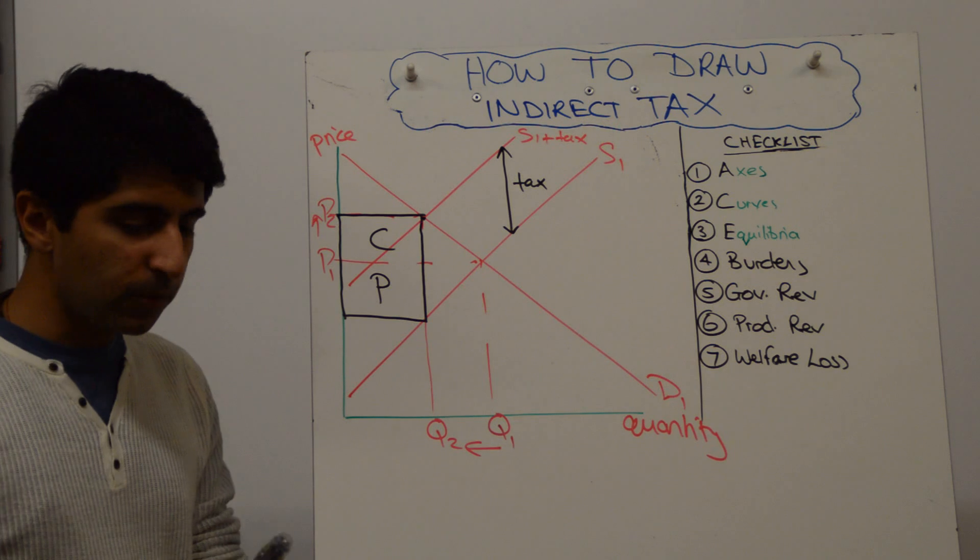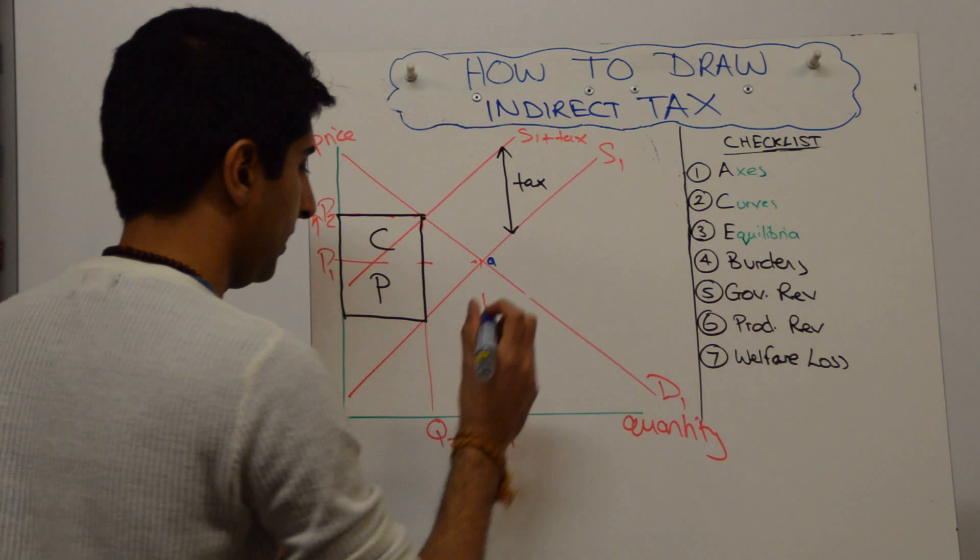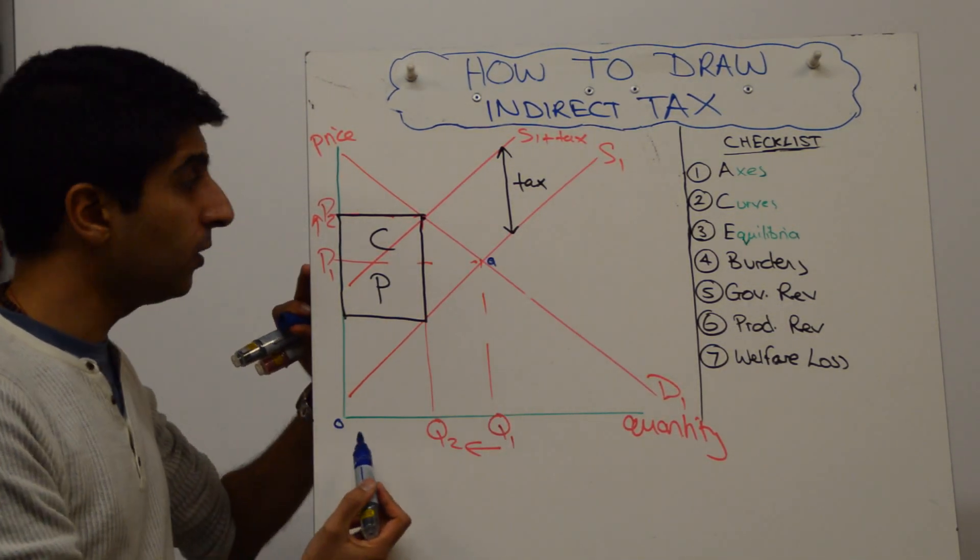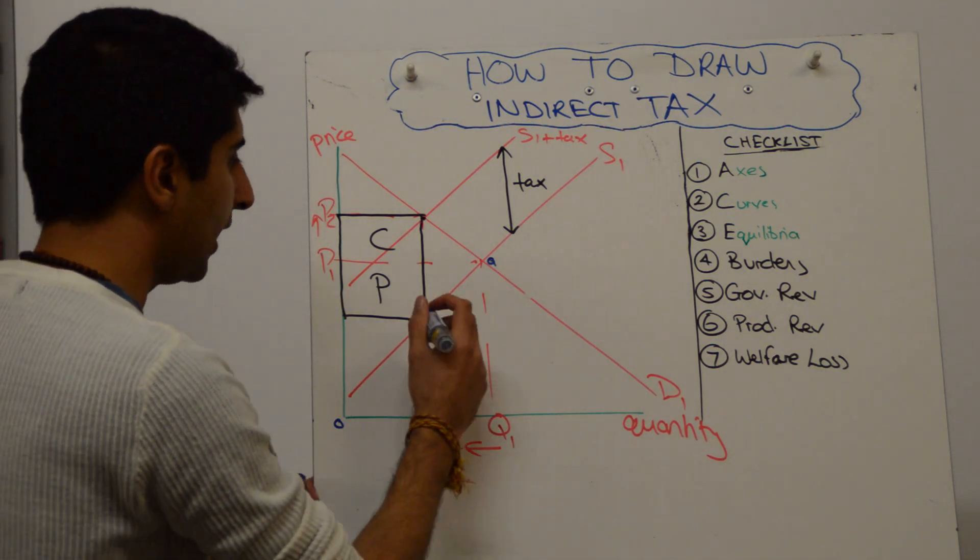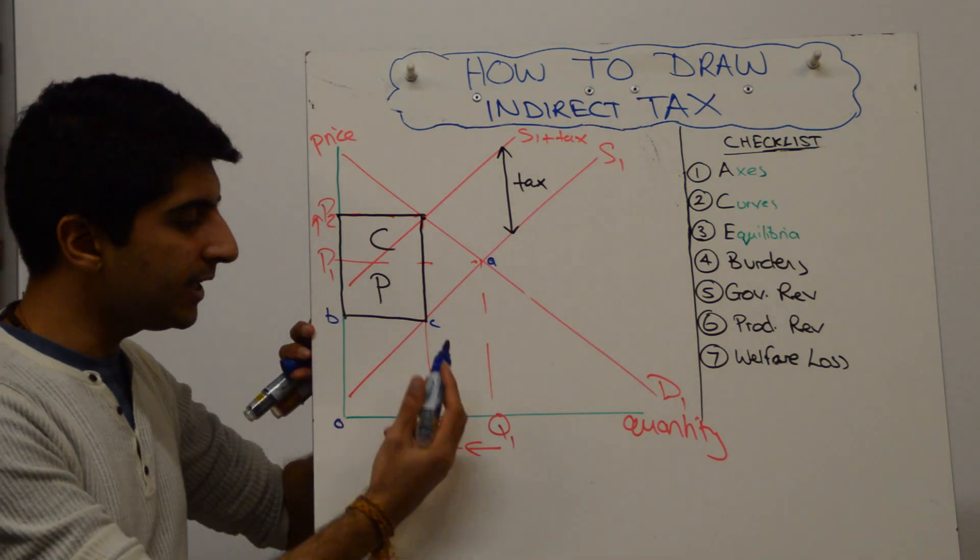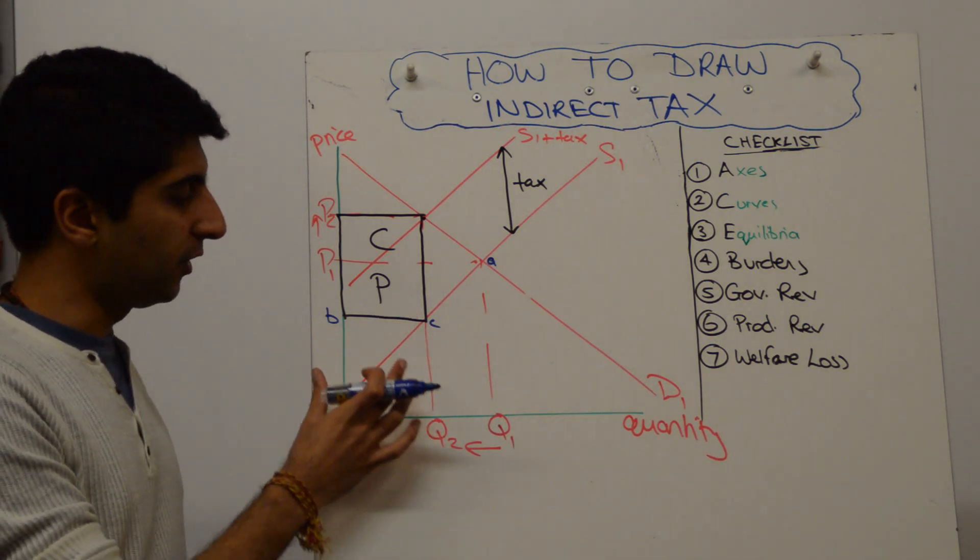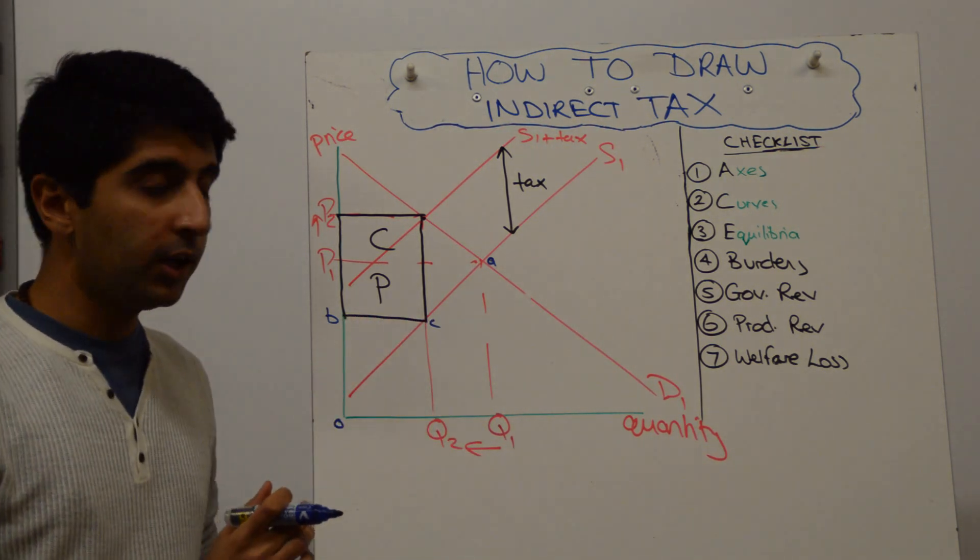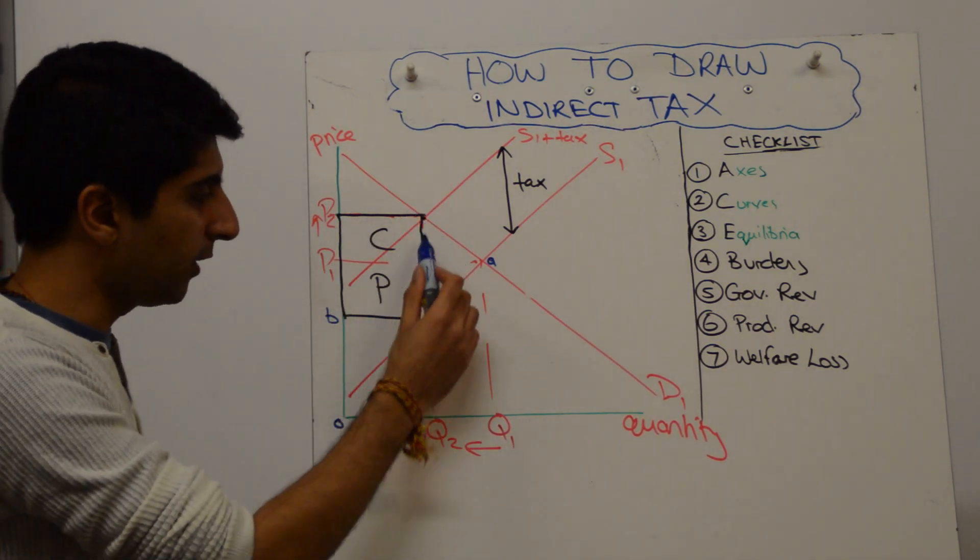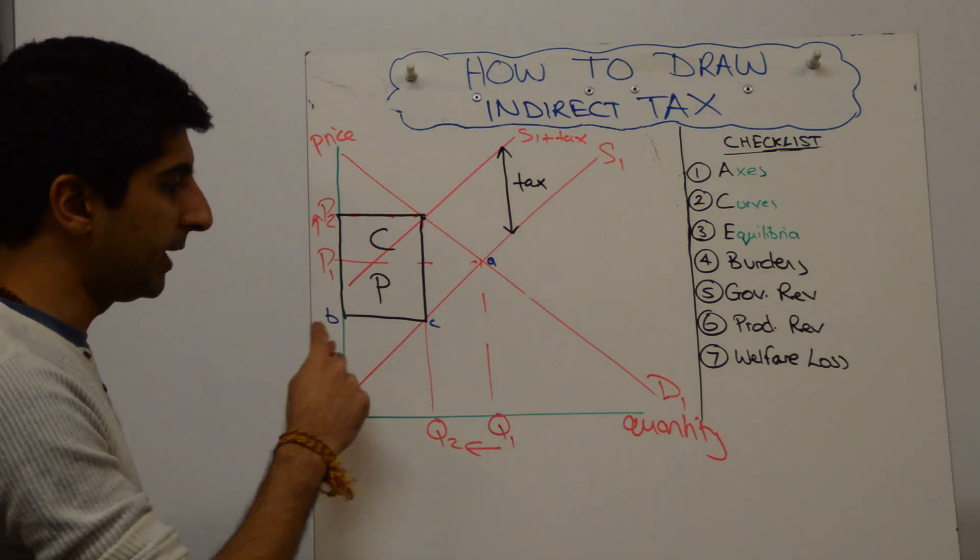We want to show producer revenue. So initially producer revenue was P1. Let's call that A. Let's call that 0. So initial producer revenue was P1, A, Q1, 0. New producer revenue is now only, let's call that B and let's call that C. It's only B, C, Q2, 0 because that big black box goes to the government. So all that's left of the producer is B, C, Q2, 0. You might think, oh, but that's charging a price of P2. So they should be getting this entire rectangle. But no, a big chunk of it is going to the government. Hence, they only get B, C, Q2, 0.